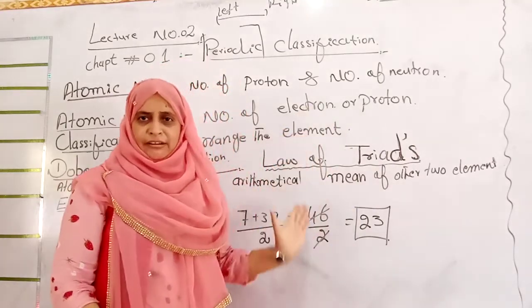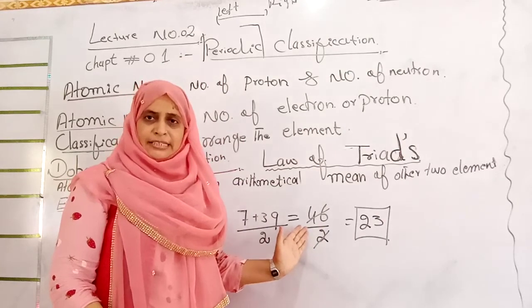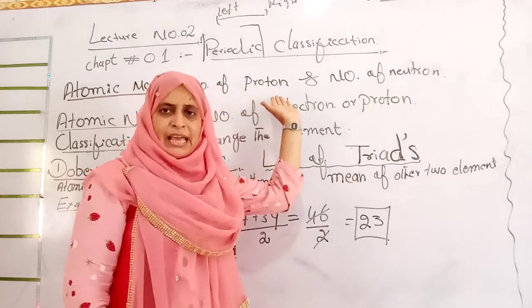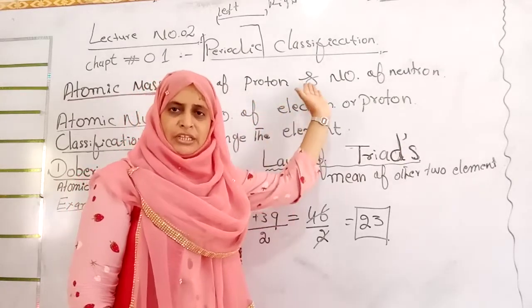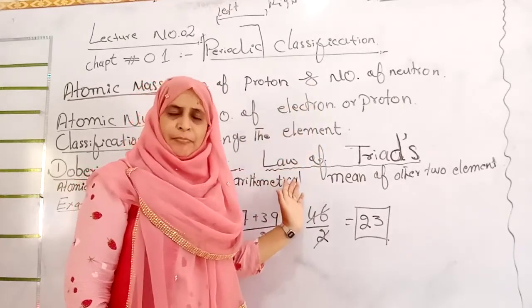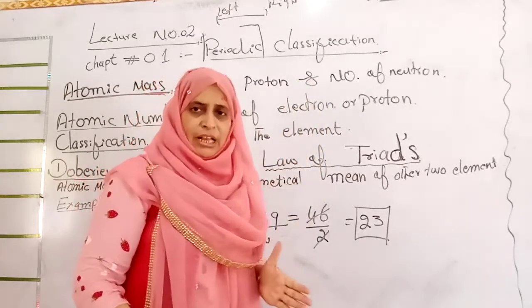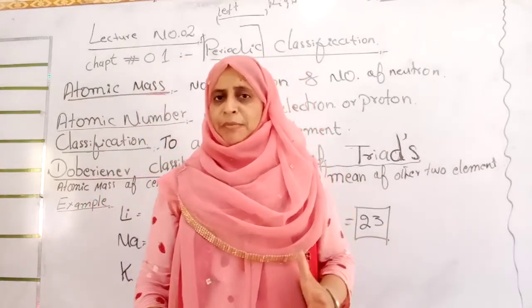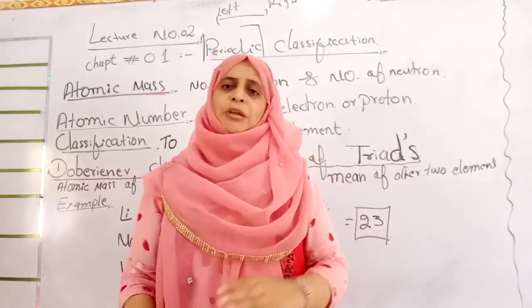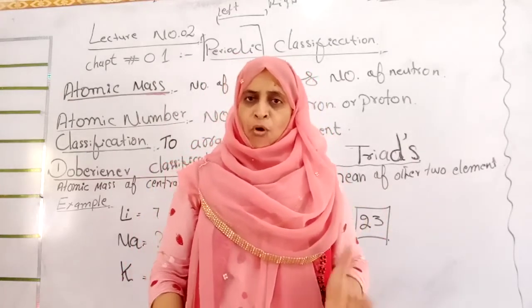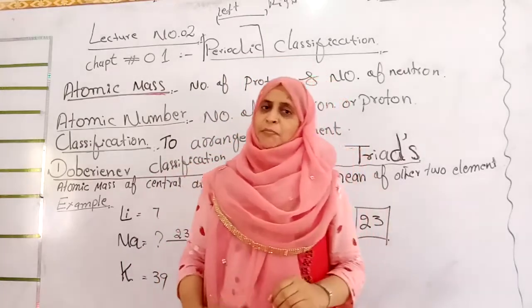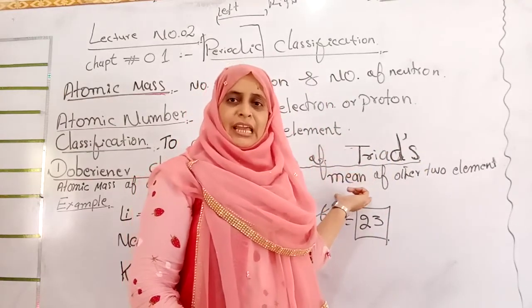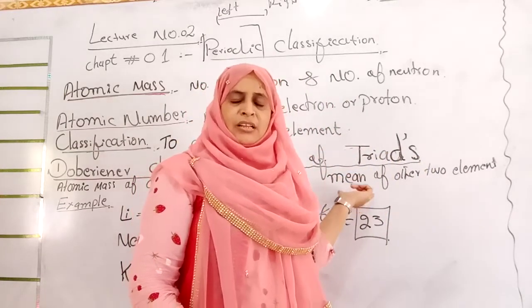This part of the lecture is ending and I will now sum up and repeat. Atomic mass, atomic number, horizontal rows, and vertical columns — you should know these terms well. What do you mean by horizontal rows and what do you mean by vertical column? Both are very important in the arrangement of elements in different groups.